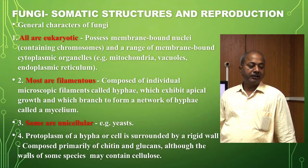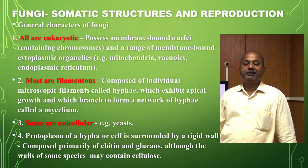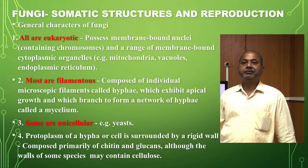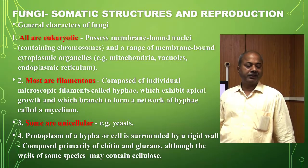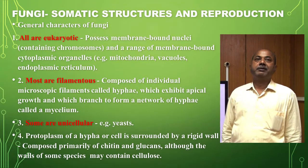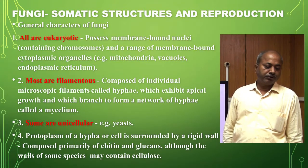The protoplasm of a hypha or cell is surrounded by a rigid wall which is composed of chitin and glucans. In some members of the fungi, you can get the cell wall of cellulose — the cell wall may contain cellulose also.